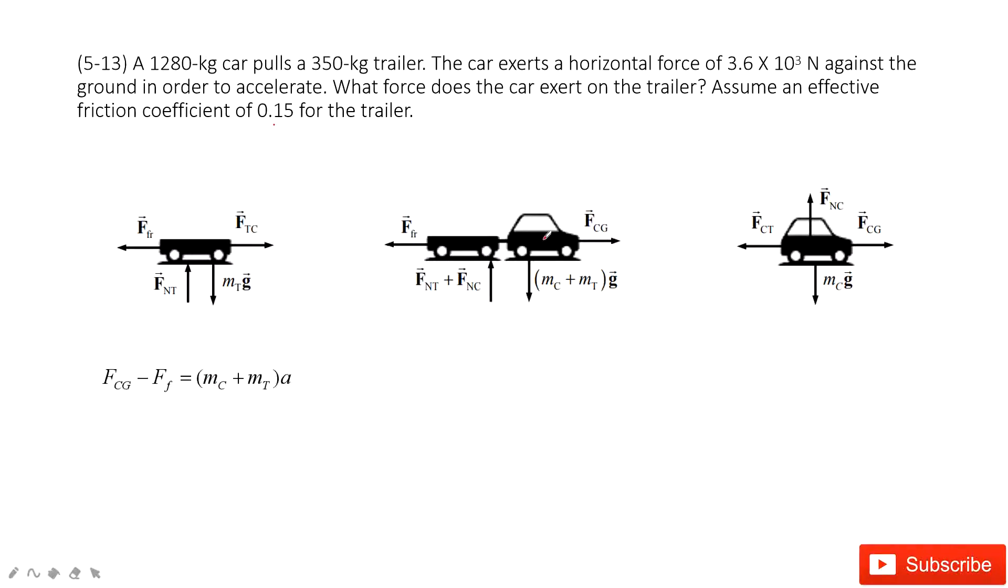So we can write the equation for this one for the acceleration. We can see the force acting on this united one. First one is the force of ground to the car, and then the friction. We consider the friction by the trailer because it tells you the friction coefficient for the trailer.